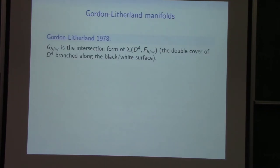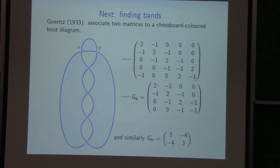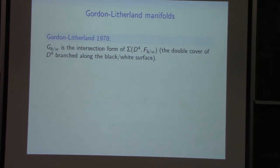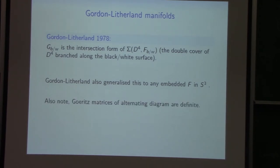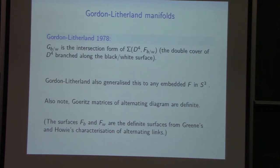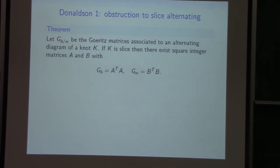Gertz associated two matrices to a knot diagram giving linking invariants, back in the 1930s. Gordon and Litherland showed these have a nice four-dimensional interpretation: these matrices are the intersection form of a four-manifold. If you take the black or white surface, push it inside the four-ball, and take the double branched cover, that matrix gives the intersection form on second homology. Gordon-Litherland generalized this to any spanning surface for your link — you take the linking number between a curve and a double normal push-off, giving the intersection form of the double branched cover.